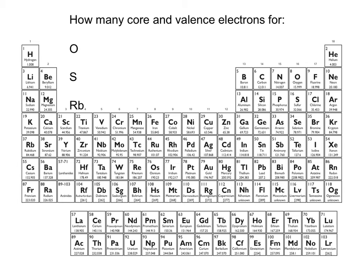Oxygen is here: one, two, three, four, five, six — so oxygen has six valence electrons. It has eight total electrons, and eight minus six means the other two are core. Sulfur is right below oxygen, so it's going to have six valence electrons as well — same column. Sulfur has 16 total electrons, so 16 minus six gives it 10 core electrons.